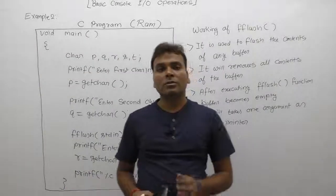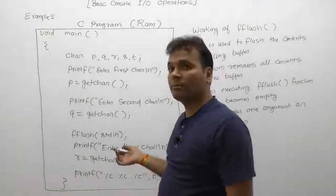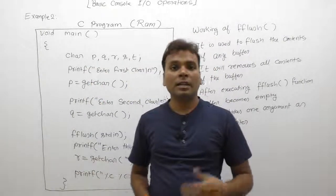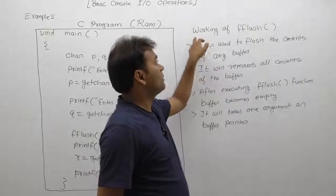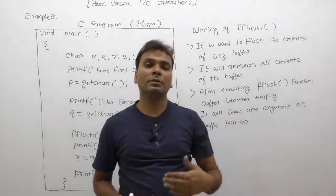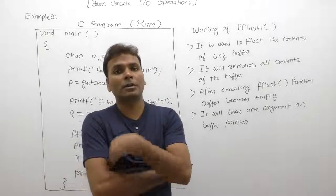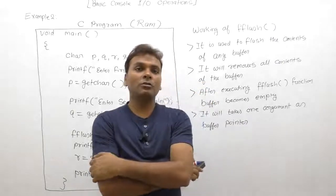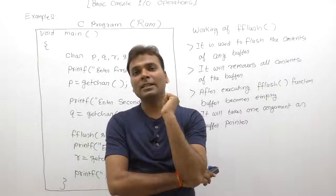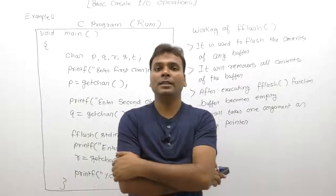Now, next example: combinations of fflush and getchar functions. This is the same as the previous program example one, but here we are using an extra function called fflush. Before solving this problem, we need knowledge about the fflush function. The fflush function is simply used to flush the contents of a buffer. Suppose the buffer has existing data read by default input functions, but we are not interested in reading existing contents — we want to read new data every time from the keyboard.